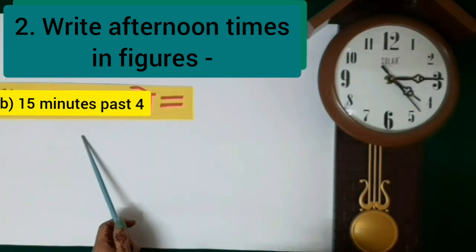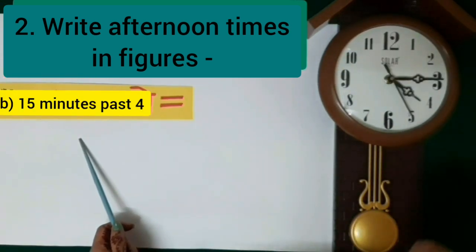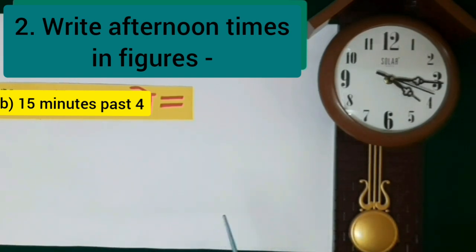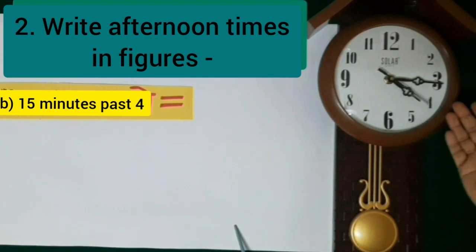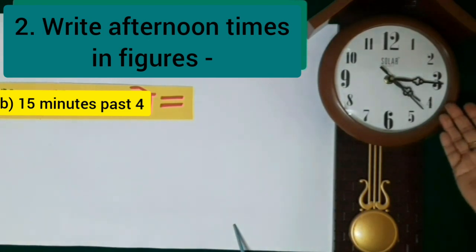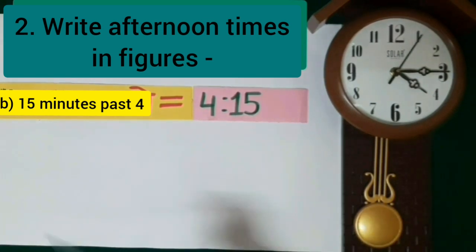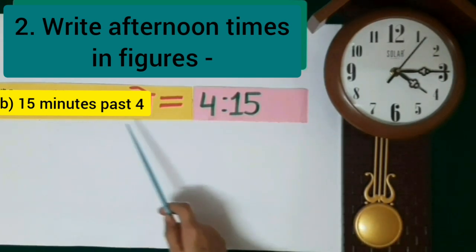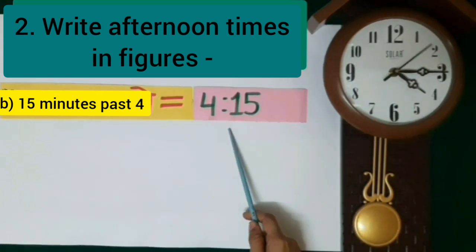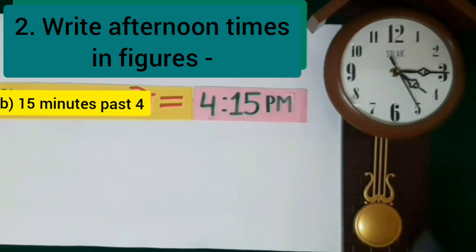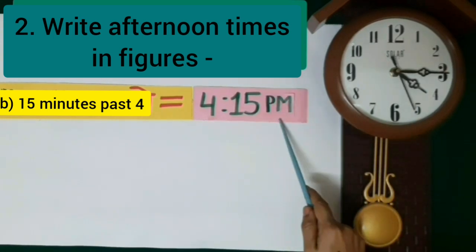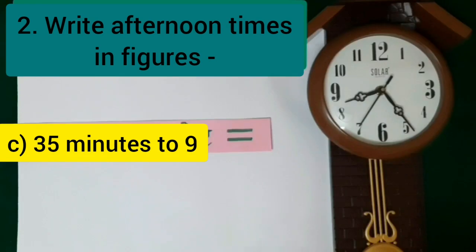In part B, the clock is showing 15 minutes past 4, afternoon time. We know when the clock shows a time 15 minutes more than an hour, we use the word 'past'. So in figures, 15 minutes past 4 is written as 4.15. It is afternoon time, so we use p.m. here — 4.15 p.m. is the answer.